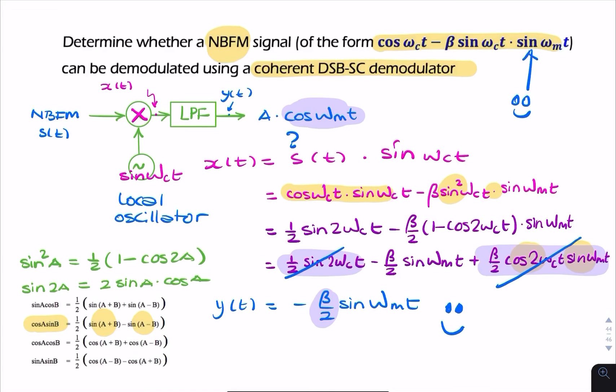So the conclusion of this is, using a coherent DSB demodulator, it is possible to recover narrowband FM. So narrowband FM can be recovered using a coherent DSB modulator.